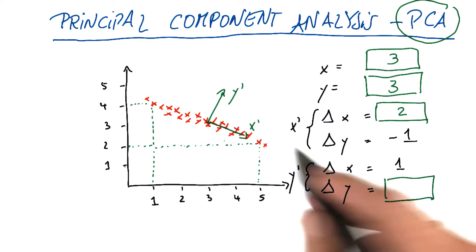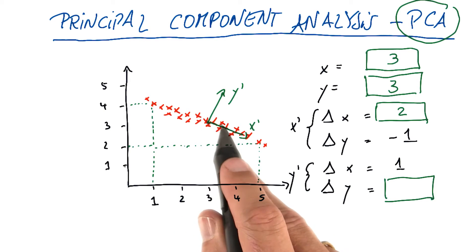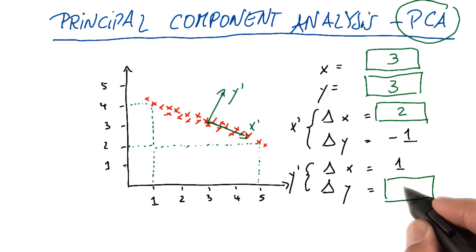And kind of orthogonally, as we go 1 to the right here, we go 2 up, so the delta y over here is also 2.